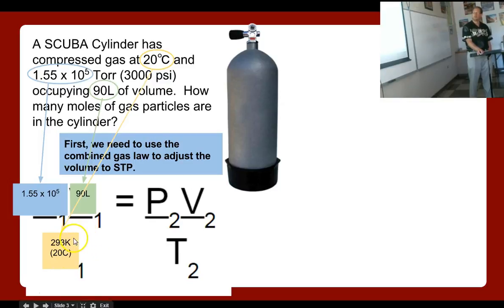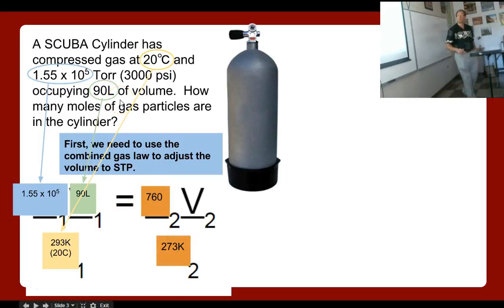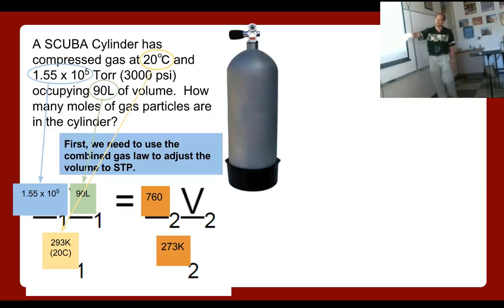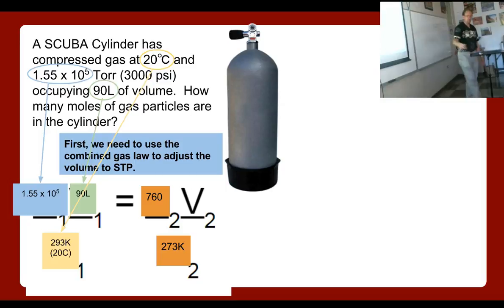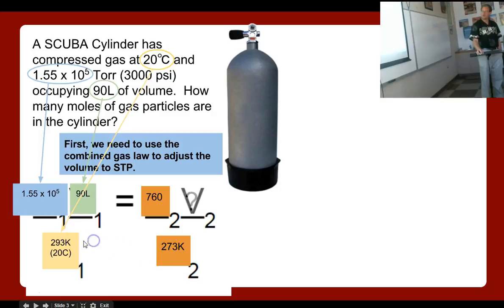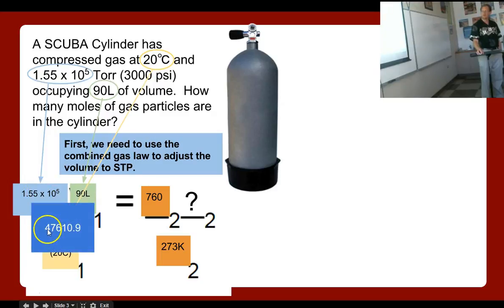Standard temperature and pressure, in torr, is 760 torr — which equals 1 atmosphere — and 273 Kelvin, which is 0°C. We need to find the volume at STP. Multiplying and dividing through, the left side equals 47,610.9, so the right side must also equal that. Solving for V₂ gives 47,610.9 divided by 760, times 273.